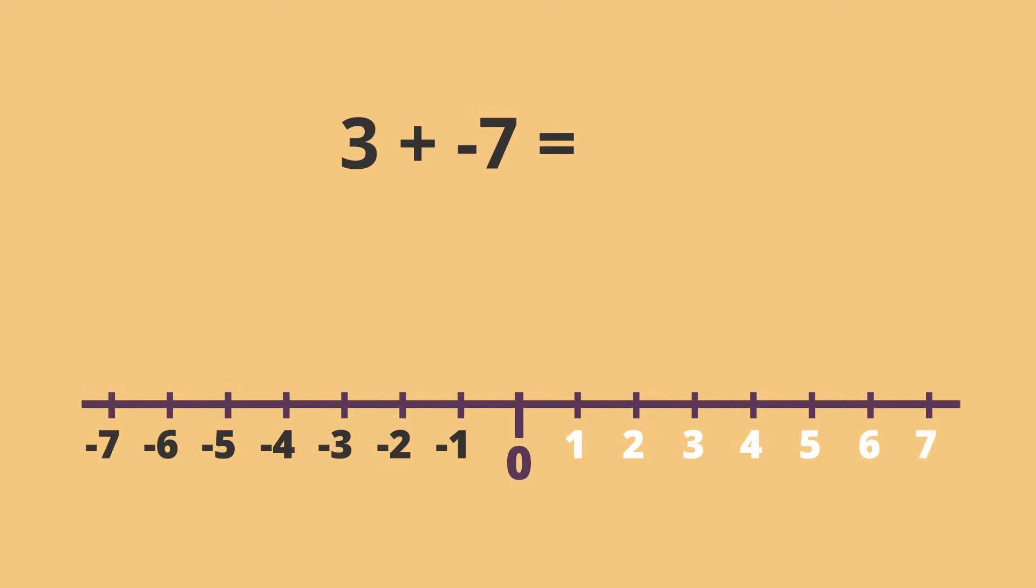Let's say we want to solve 3 plus negative 7. First imagine a number line with a bird sitting on our first number, 3.